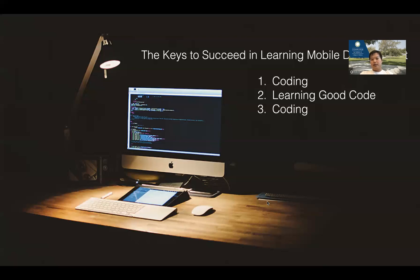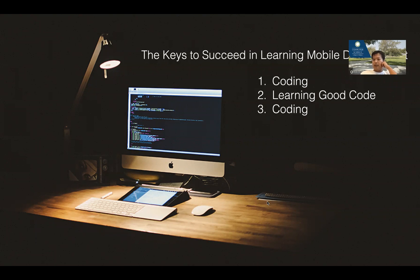Publishing on Android costs $25 for a lifetime account. I'll also provide a group account for iOS — it's more expensive at $100 per year to maintain the iOS developer account. For this course, we don't do group projects — it will be individual projects. You don't need a group effort for this one, and you'd push yourself to learn all the details. This is different from software engineering where we want you to experience organization and coordination. For mobile, you just need to master the skill set.